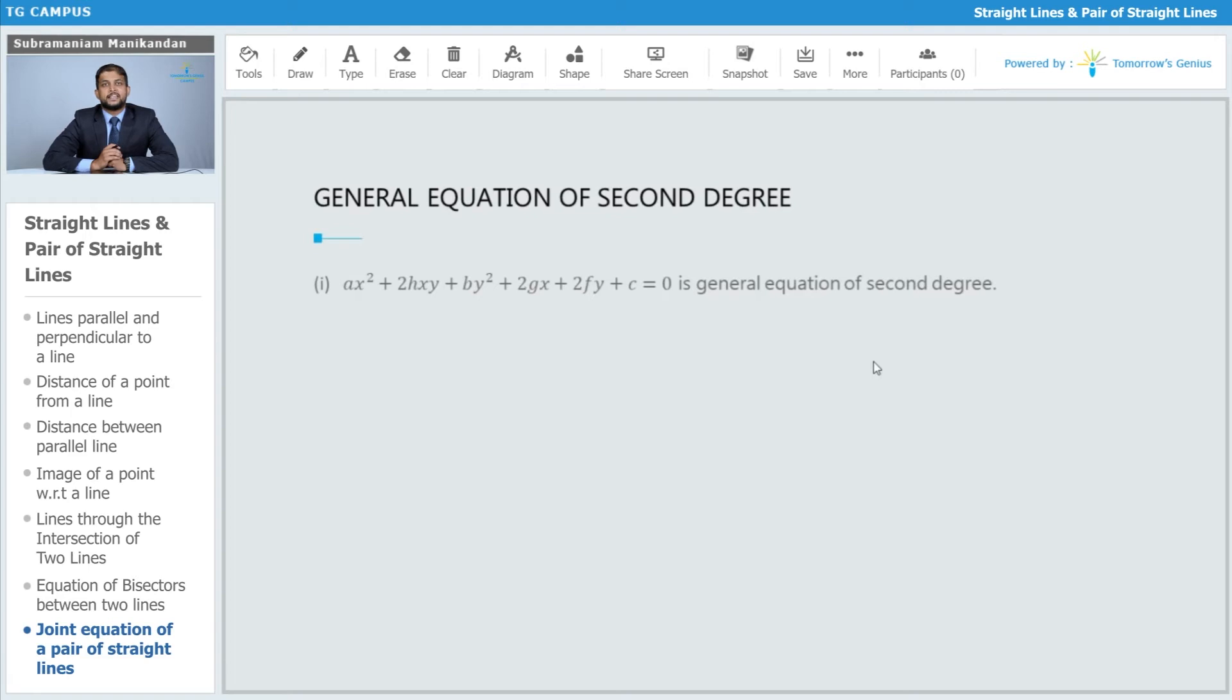The general second degree equation in x and y represents, as we have seen, special curves called conic sections, or a special type of geometrical figure called pair of straight lines, which basically represents two straight lines which intersect each other at some point or may not intersect.